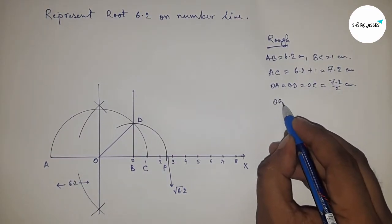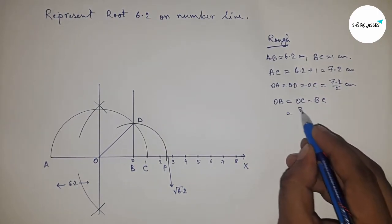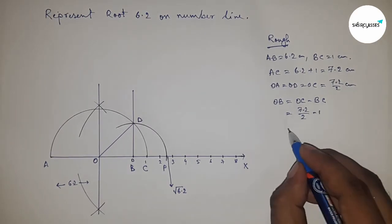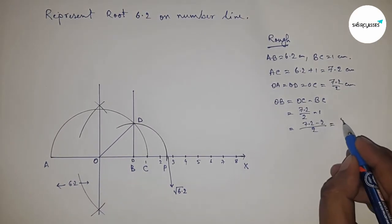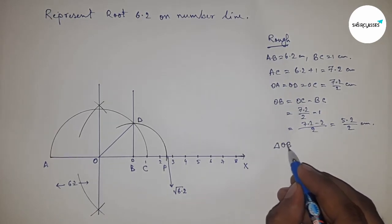Next, OB equal to OC minus BC. So putting the value of OC and BC and calculating this, so this is 5.2 by 2 centimeter. Next, the right angle triangle OBD, we can write: